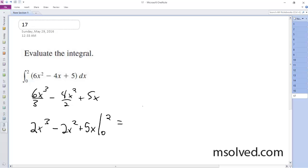Evaluating at these given points from 2 to 0: 2 times 2 cubed minus 2 times 2 squared plus 5 times 2. This ends up being 2 times 8, which is 16, minus 2 times 4, which is 8, plus 10.